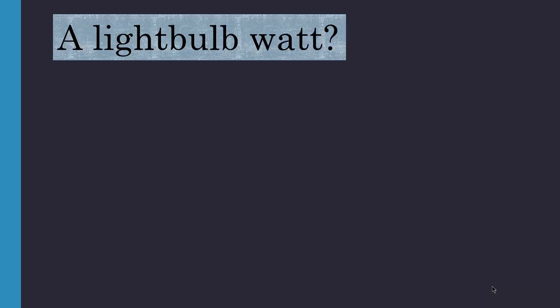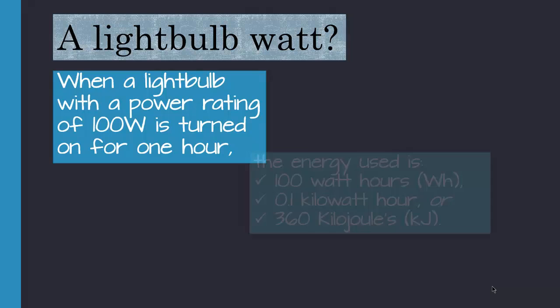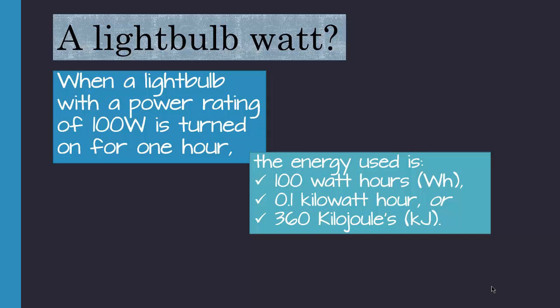A lightbulb watt? When a lightbulb with a power rating of 100W or 100 watts is turned on for one hour, the energy used is the same thing as 100 watt hours, 0.1 kilowatt hours, or 360 kilojoules.